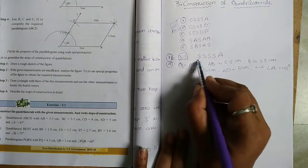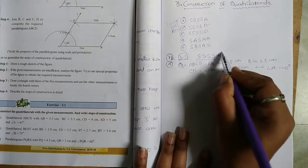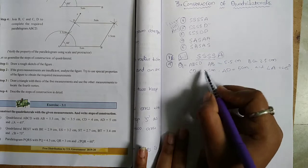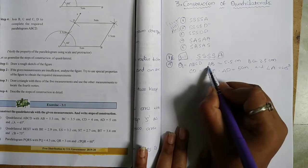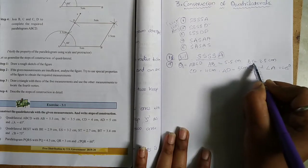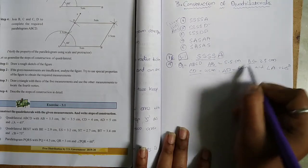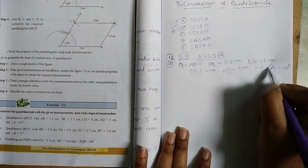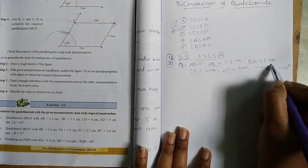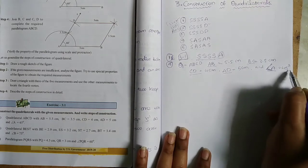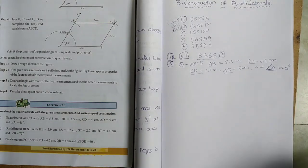Now we have four sides here — AB, BC, CD, and AD — and one angle: angle A equals 45 degrees. This is a case of four sides and one angle.